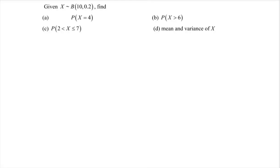Hello everyone. In this video I'm going to discuss an example for binomial distribution. Given that X is binomially distributed with n equal to 10 and probability of success equal to 0.2. Find: a) the probability that X is equal to 4.